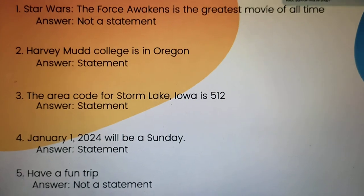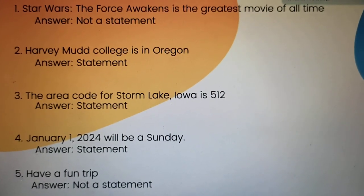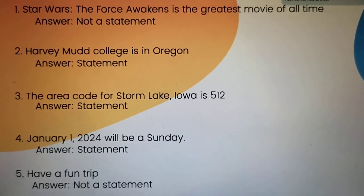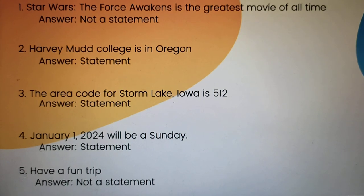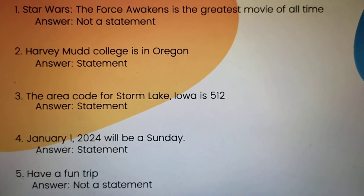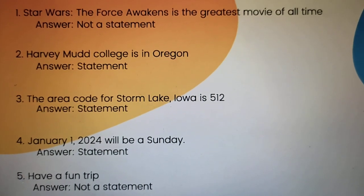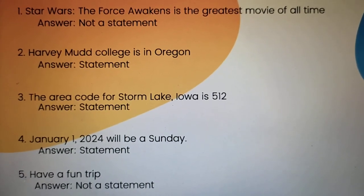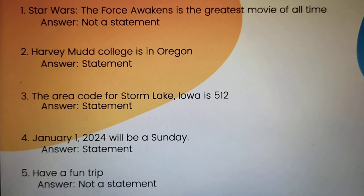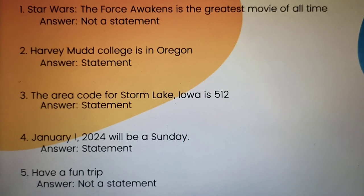Number 3: 'The area code for Storm Lake, Iowa is 512.' It is a statement, or a false statement, because the sentence is declarative.